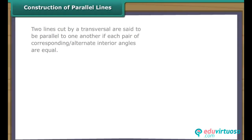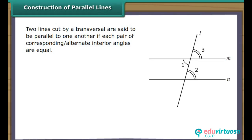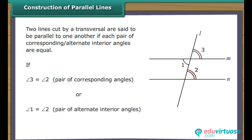Construction of Parallel Lines: Two lines cut by a transversal are said to be parallel to one another if each pair of corresponding alternate interior angles are equal. In the figure, if angle 3 is equal to angle 2, or angle 1 is equal to angle 2, line M is said to be parallel to N.